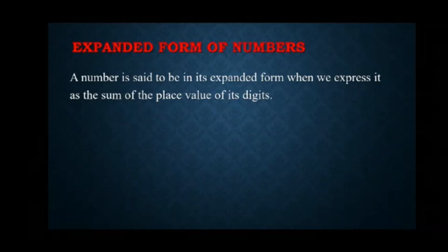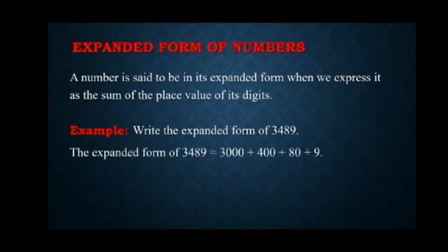Let us try to understand with an example. For example, if we have to write 3489 in expanded form, then the place value of 3 is 3000, place value of 4 is 400, place value of 8 is 80, and place value of 9 is 9.